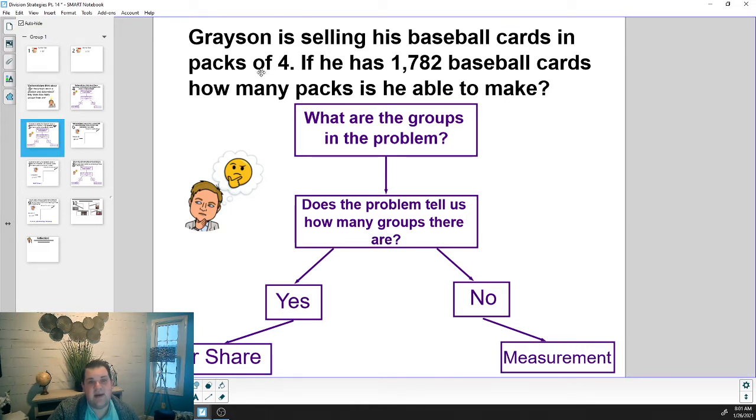If you said no, you are correct. It tells us he's going to make packs with four in it, but he doesn't tell us how many packs he's going to be able to make. So the answer is no, which makes this a measurement type of problem. We know how much is in each pack or each group, but we don't know how many groups there are, how many packs there are.